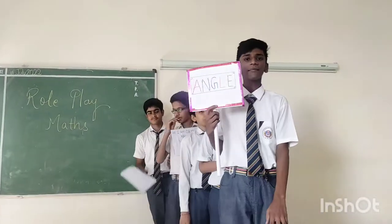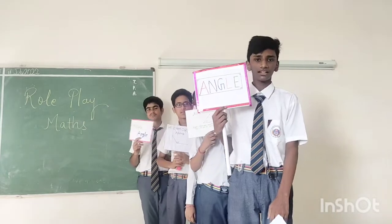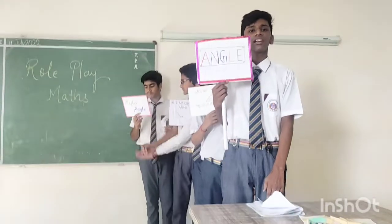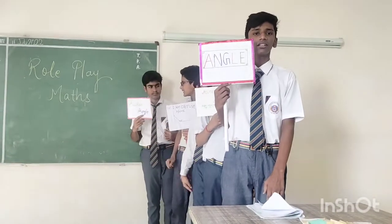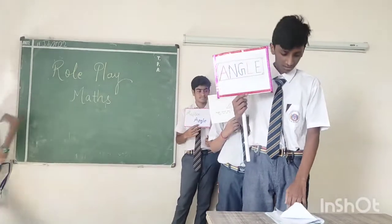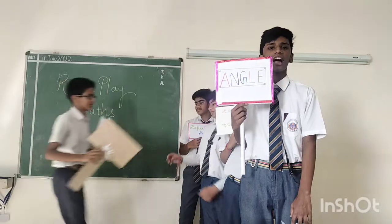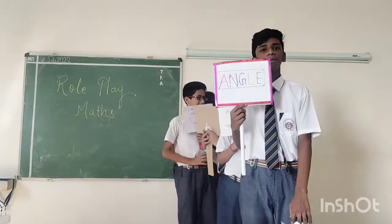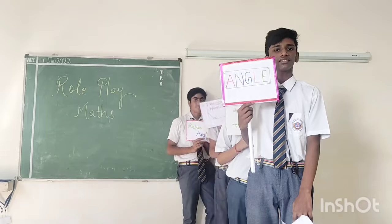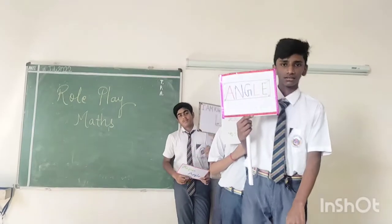Hello everyone, I am Angle and I am formed when two rays meet at a common point. My best friends are rays because if they would not be there then I would also not be there. I am measured in degrees. You can see me everywhere. I am there in every polygon, whether it be a triangle or any shape — you can see me everywhere.